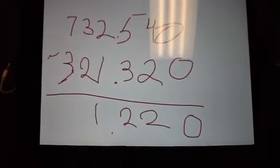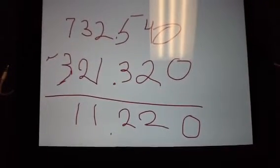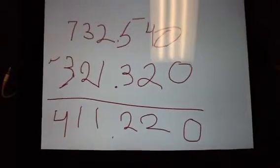2 minus 1 which is 1. 3 minus 2 is 1. And 7 minus 3 is 4.